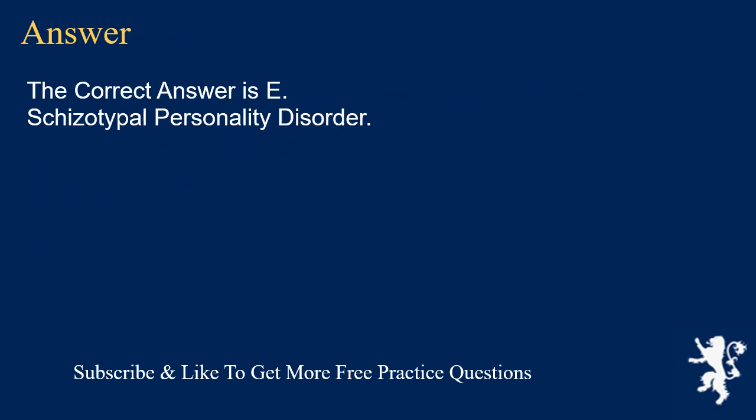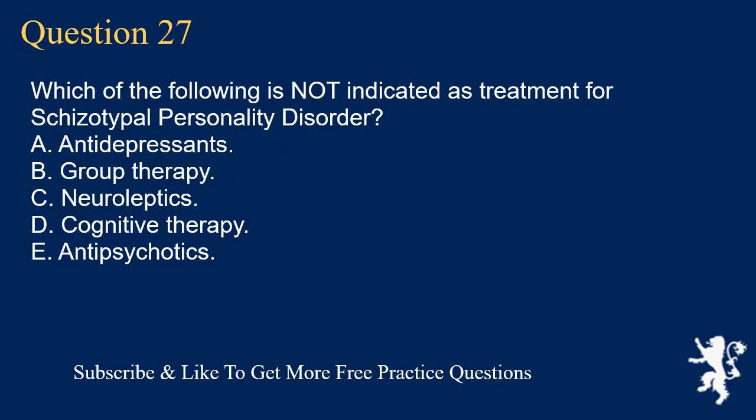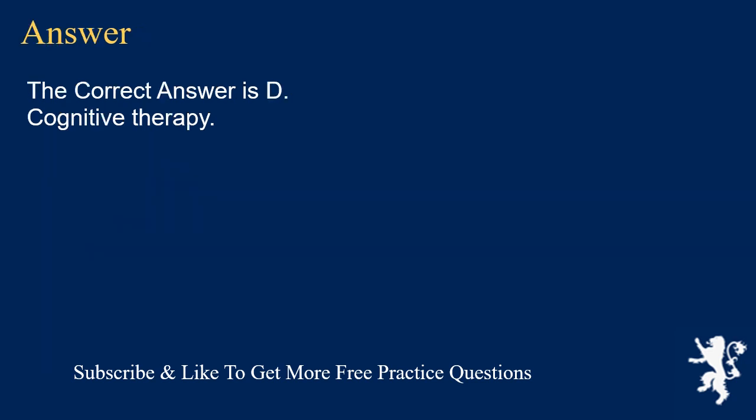Question 27. Which of the following is not indicated as treatment for Schizotypal Personality Disorder? A. Antidepressants. B. Group Therapy. C. Neuroleptics. D. Cognitive Therapy. E. Antipsychotics. The correct answer is D. Cognitive Therapy.